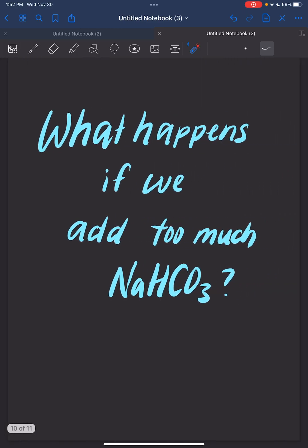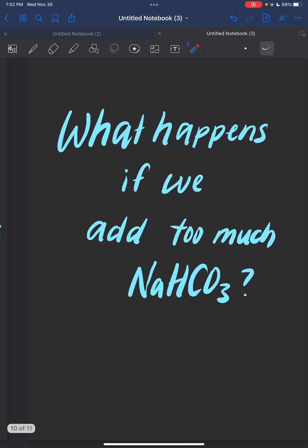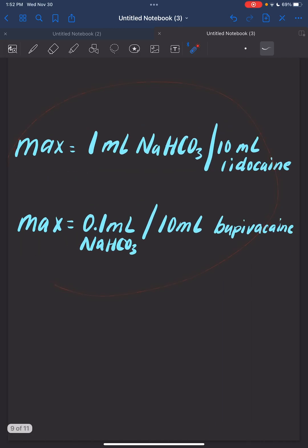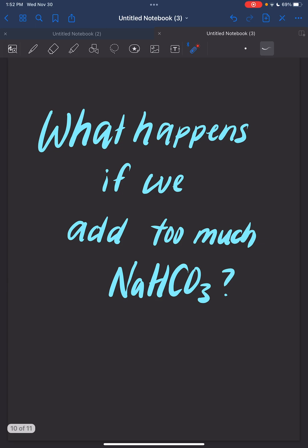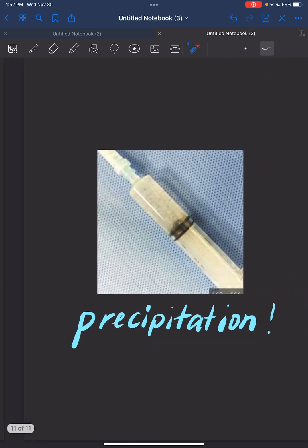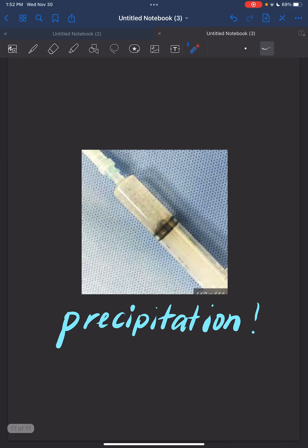What happens if we ignore these max concentrations or max additives and add too much bicarb? Our solution is going to precipitate and we won't be able to use it anymore. We never want to inject a precipitated solution into anybody.